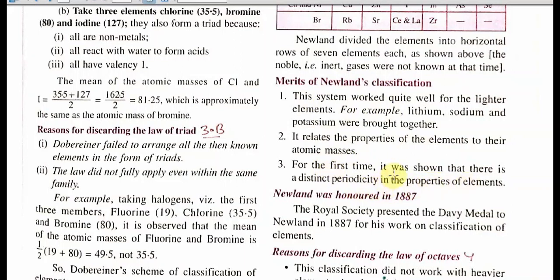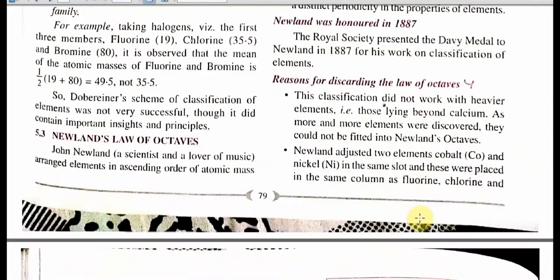That third point is very, very important and you will learn more about it in Class 11. Newland, in 1887, was honored by the Royal Society of Great Britain and presented the Humphry Davy Medal. This rule was quite successful, but when more elements were discovered, it started to fail. This classification did not work with heavier elements — those beyond calcium, meaning atomic number greater than 20.